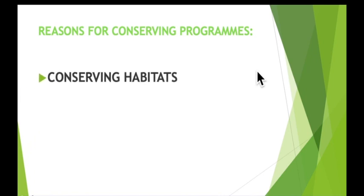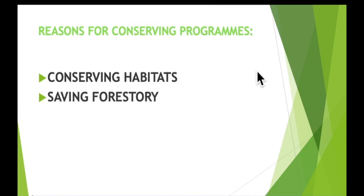First, conserving habitats: many people believe we have no right to make any species extinct — we share the Earth with a whole range of species and have a responsibility to ensure they can live successfully in their habitats, keeping them safe for future generations to enjoy. Second, saving forestry: cutting down large numbers of trees can reduce the amount of water vapor that returns to the air, which in turn can reduce rainfall. People who depend on locally collected wood for fuel may no longer be able to heat their homes or cook food. Taking care of the environment helps make our own living conditions more pleasant and safe.